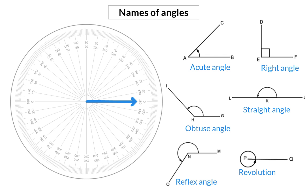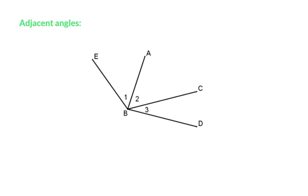Next we're going to have a look at a few terms that are used for angles. First off, you need to know what adjacent angles are. Adjacent angles firstly have a common vertex or common point, and in this case that would be point B. Then it also has a common arm or line, which means that we can say for our sketch that angle B1 and B2 are adjacent angles.